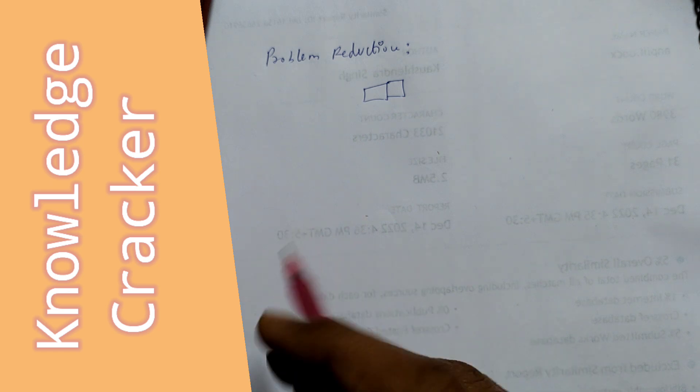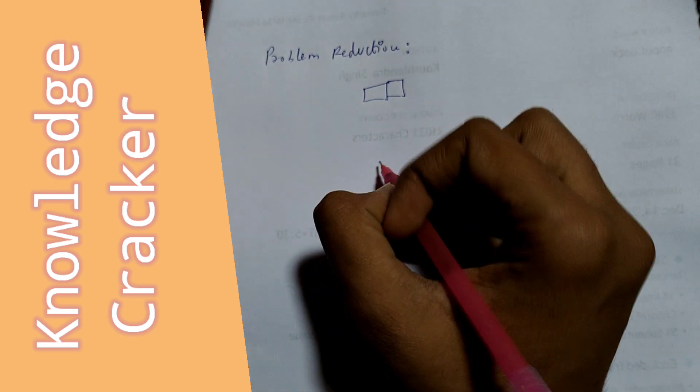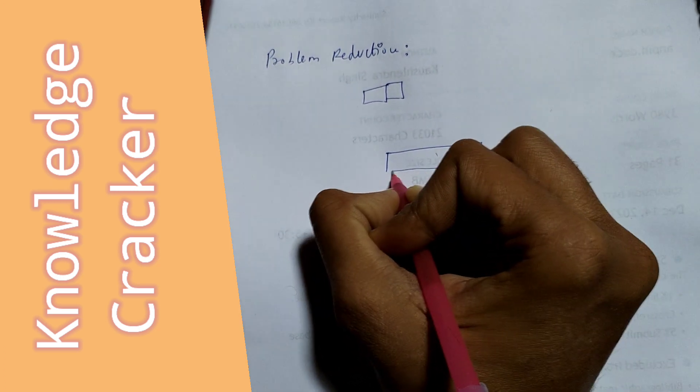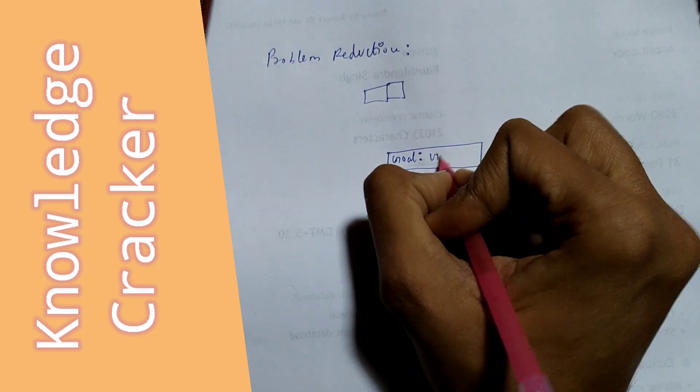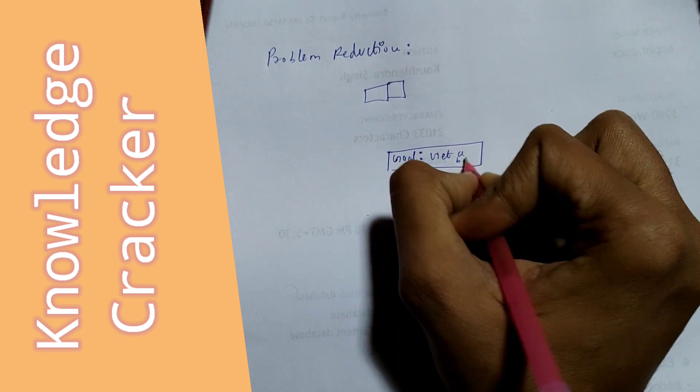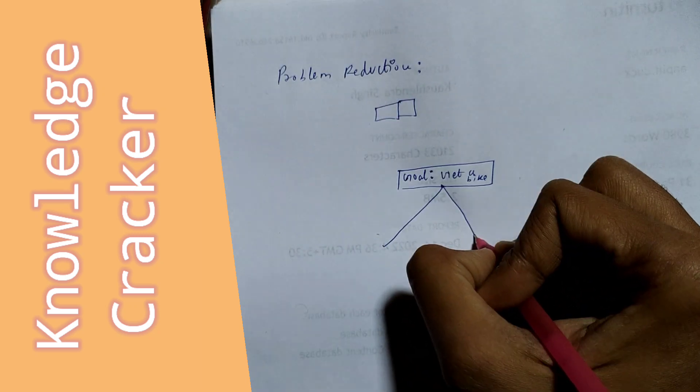It uses the AND/OR graph. For example, we have the goal to get a bike, and we have three options.